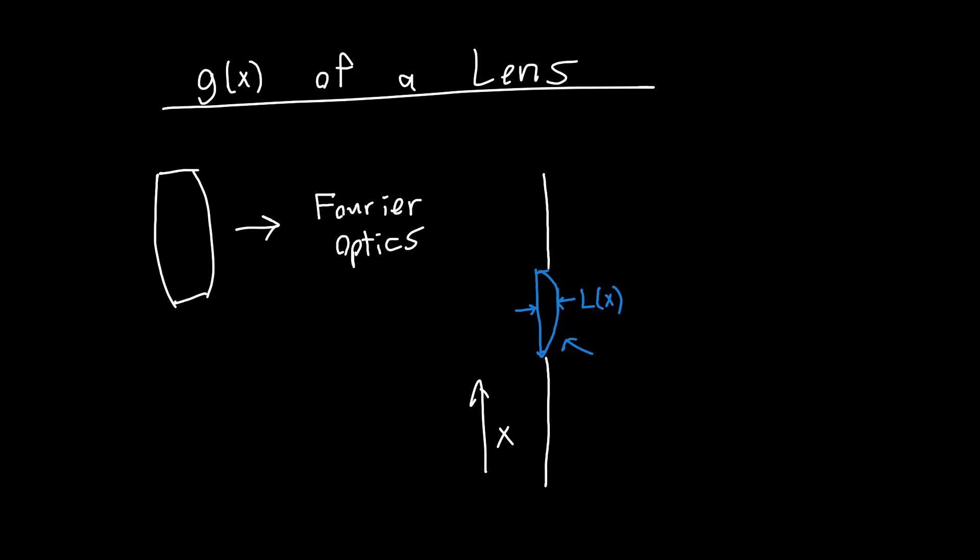So what is the aperture function g of x of this element here? For now we're going to ignore the finite extent of the lens. We're not going to worry about the aperture function needing to be multiplied by this square function with some distance, let's call this a. For now don't worry about that, but keep that in the back of your mind.